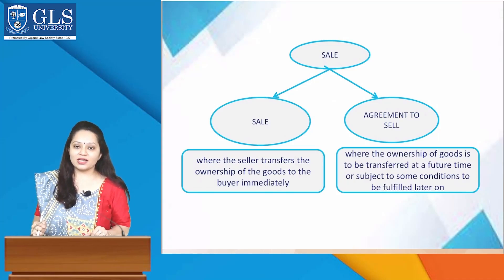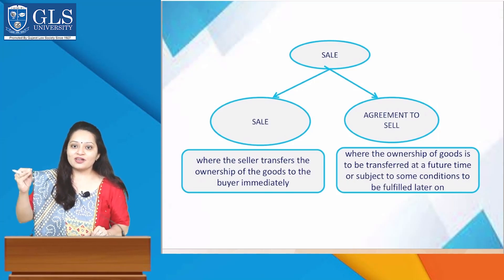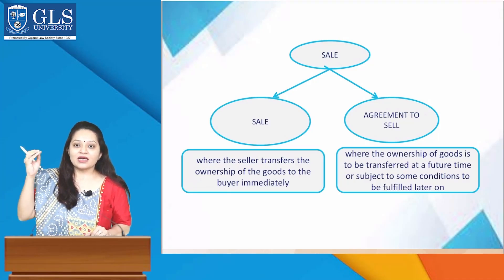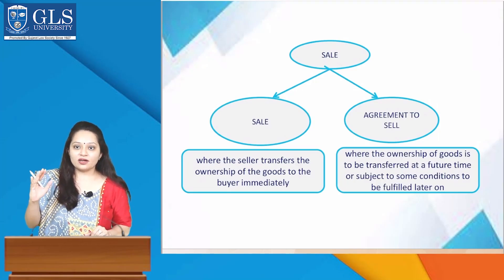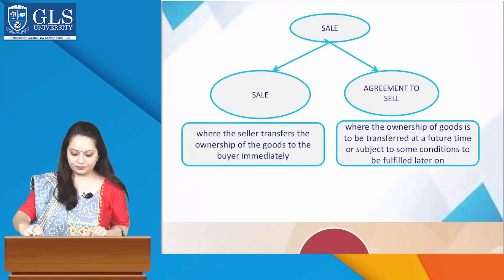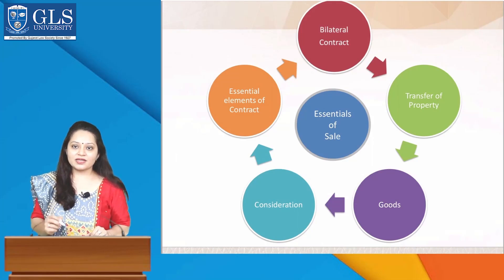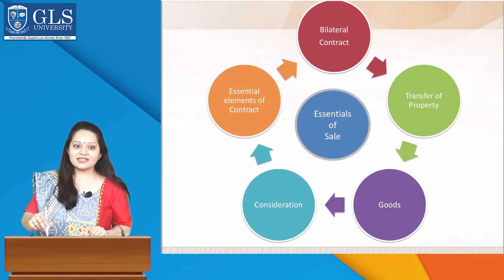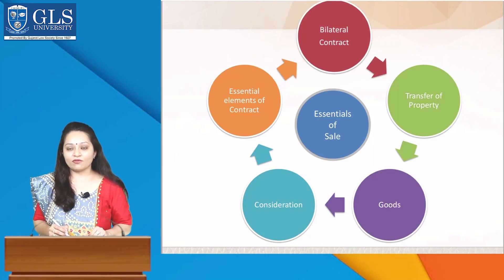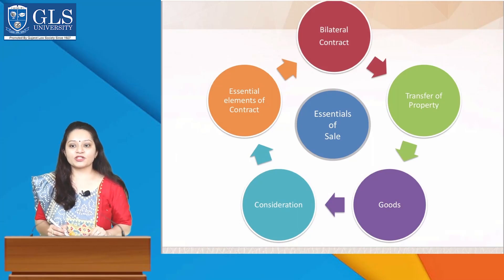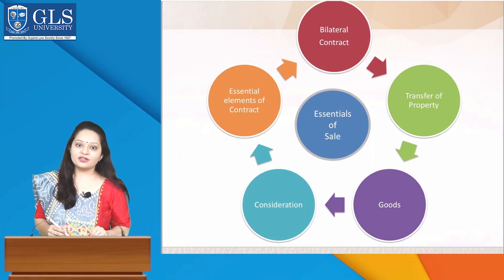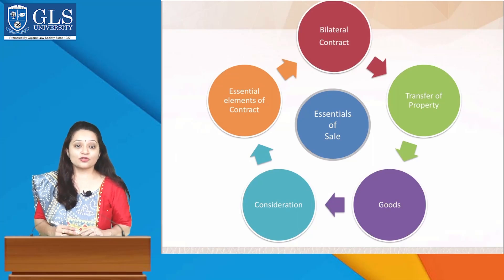Now we are going to study what essential elements must be present in a contract to be called a contract of sale. These are the essentials of contract of sale: bilateral contract, transfer of property, goods, consideration, and essential elements of contract. Today we will be studying all these essentials individually.